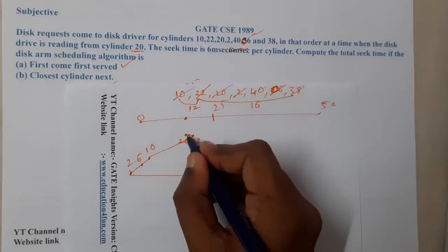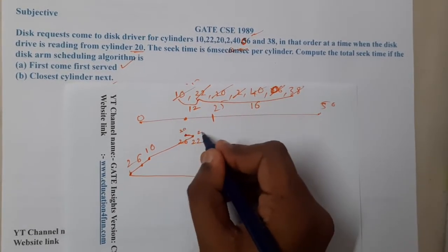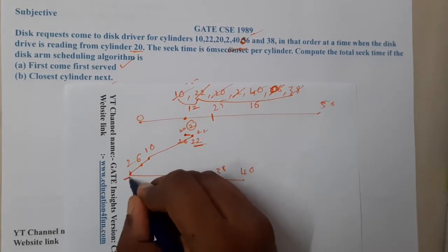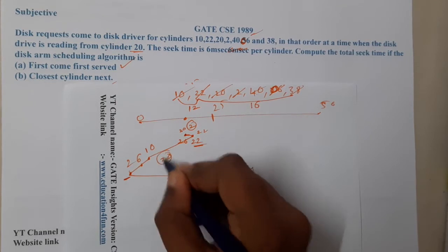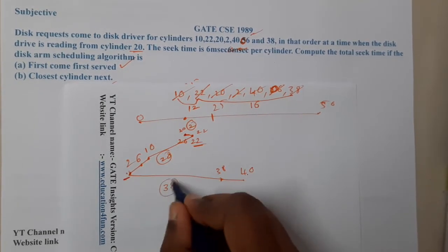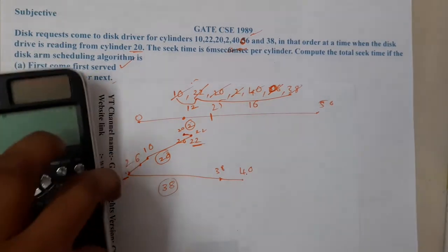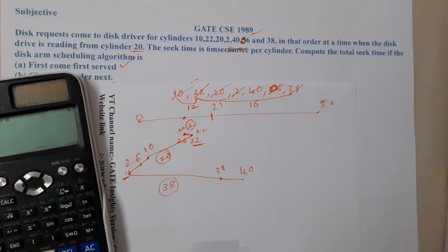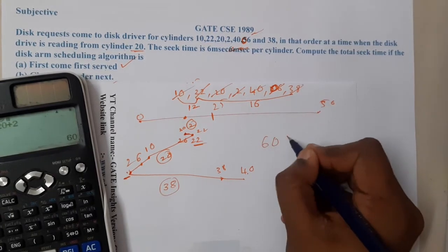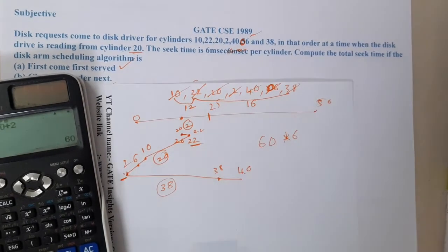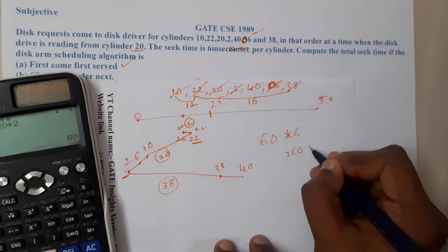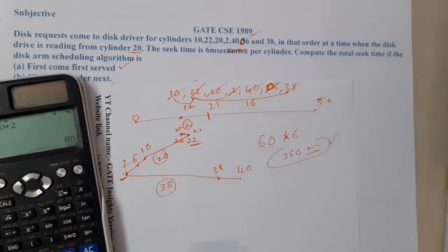Now let's calculate SSTF distances. From 20 to 22 is 2. From 22 back to 2 is 20. From 2 to 40 is 38. So total: 38 + 20 + 2 = 60. So 60 into 6 is 360 milliseconds.